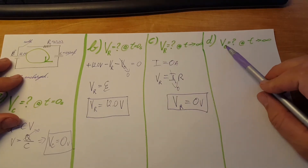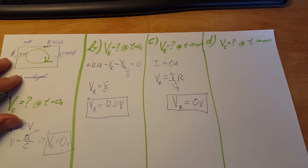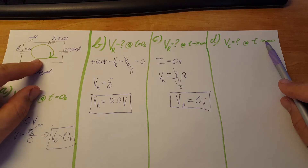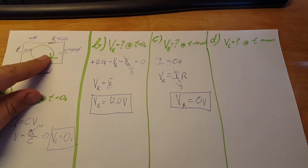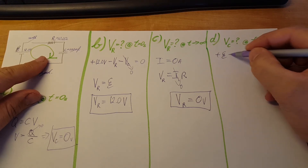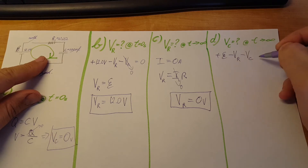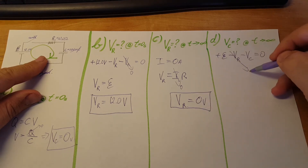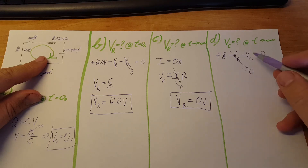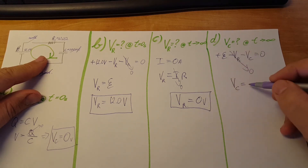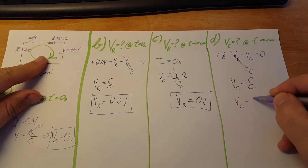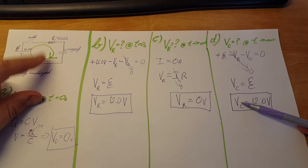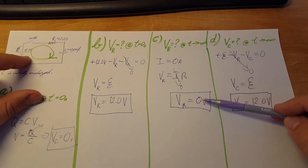Part D: voltage across the capacitor a long time after the switch is closed. Using the loop rule again clockwise: EMF minus voltage across the resistor minus voltage across the capacitor equals zero. Since VR is zero, VC equals the EMF — VC equals 12.0V. The entire voltage drop is now across the capacitor.